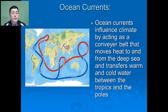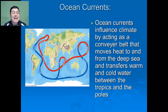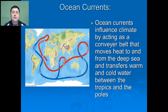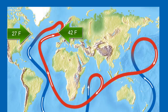Another major factor that influences our climate is ocean currents. Ocean currents influence climate by acting as a conveyor belt that moves heat to and from the deep sea and transfers warm and cold water between the tropics and the poles. It is the differences in temperature and water density that create warm and cold ocean currents. Prevailing winds and irregularly shaped continents interrupt these currents and cause them to flow in roughly circular patterns between the continents. That distribution of heat keeps places like Ireland and England much warmer than they would otherwise be at such a high latitude. For example, the average low in London in December is 42 degrees Fahrenheit, while in St. John's, Newfoundland the average is 27 degrees Fahrenheit.